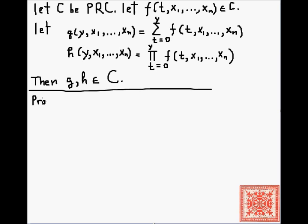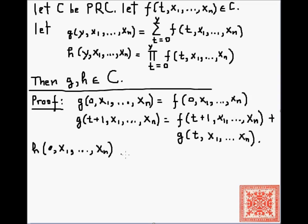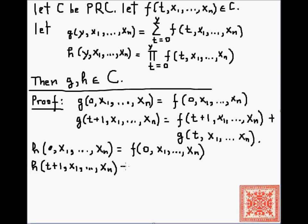The idea of the proof is to write recurrences for G and H and express them as defined by primitive recursion. These are the recurrences for G, and these are the recurrences for H. In the recursive case, H uses F of t+1, x1 through xn, times H of t, x1 through xn.